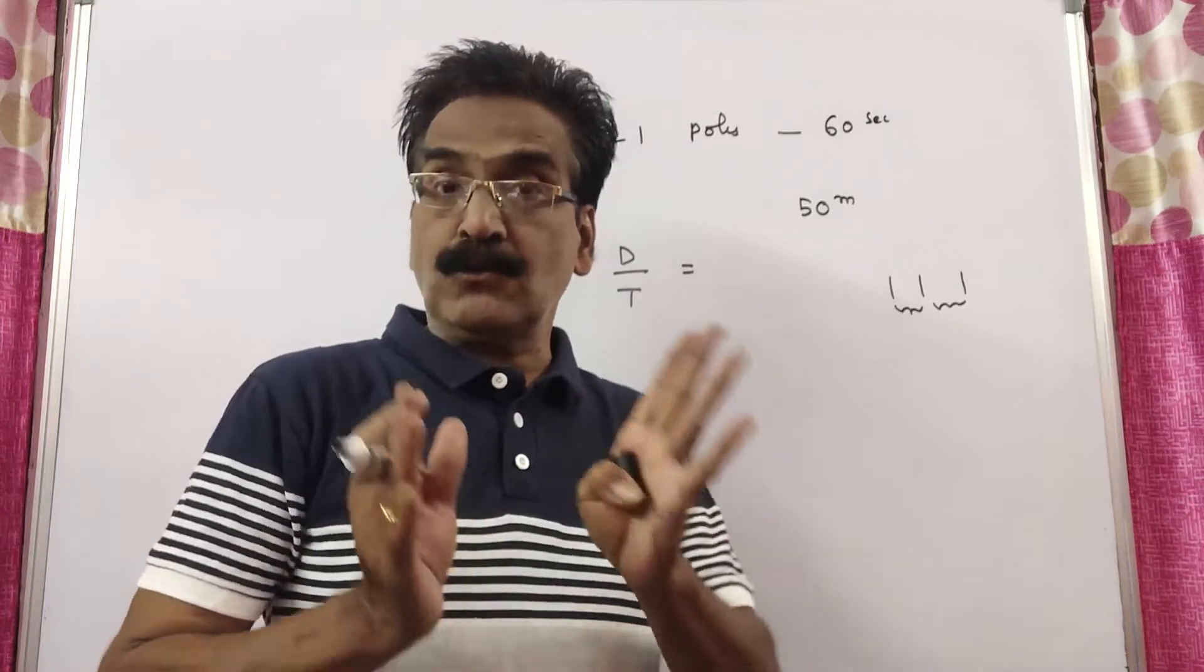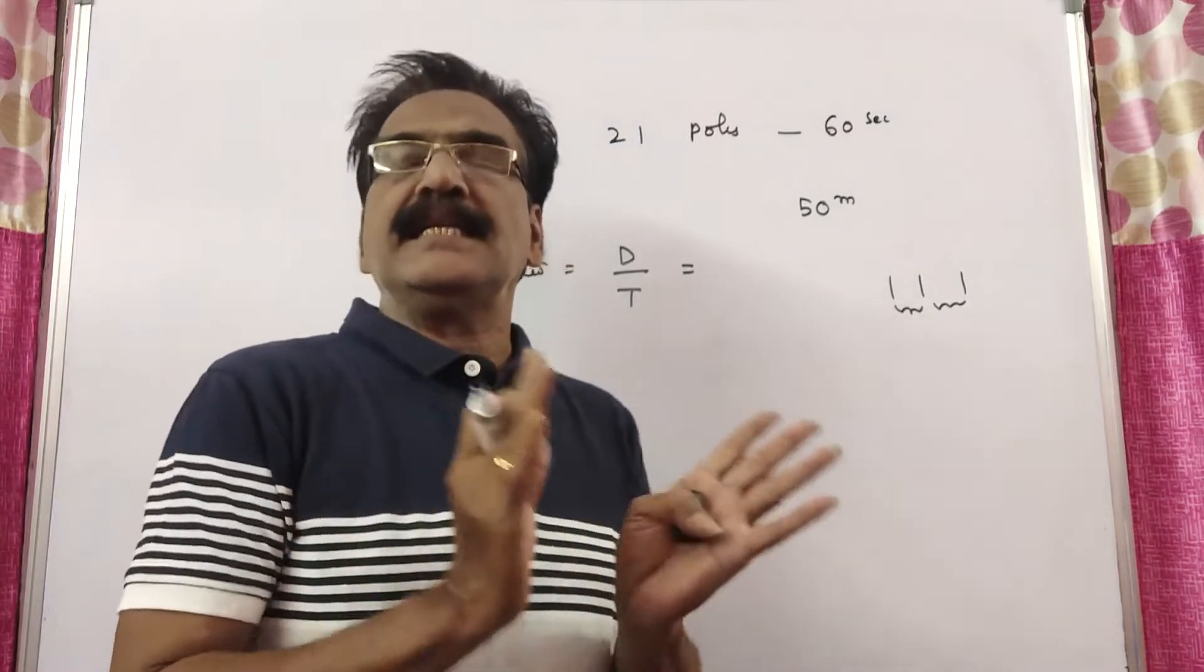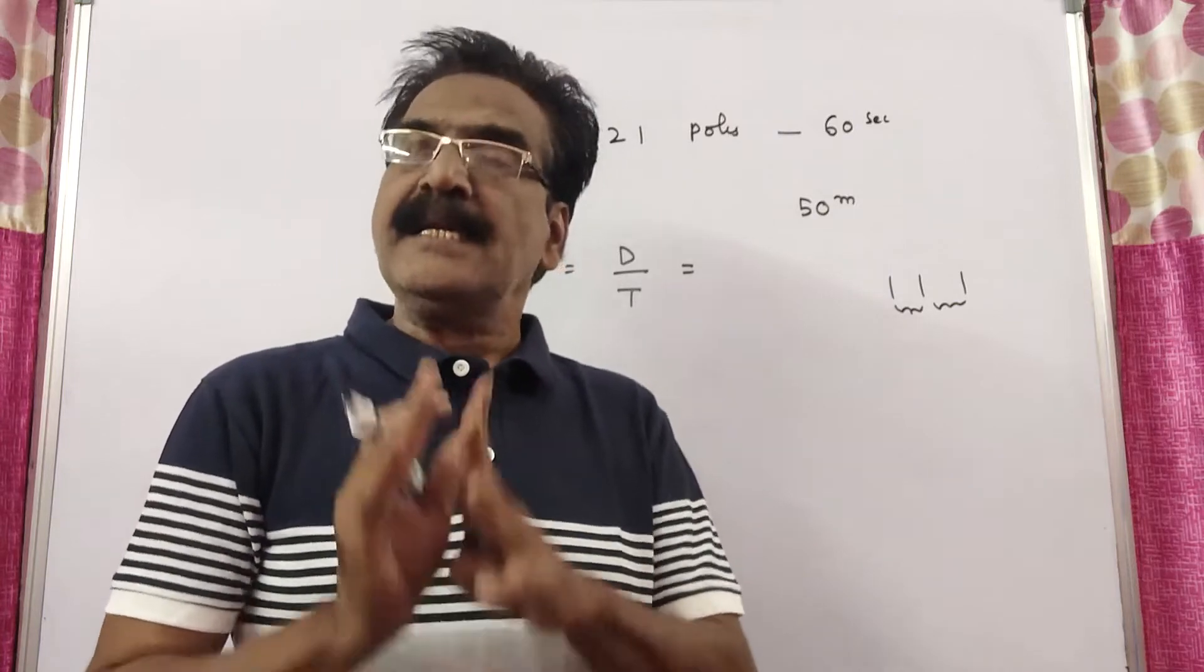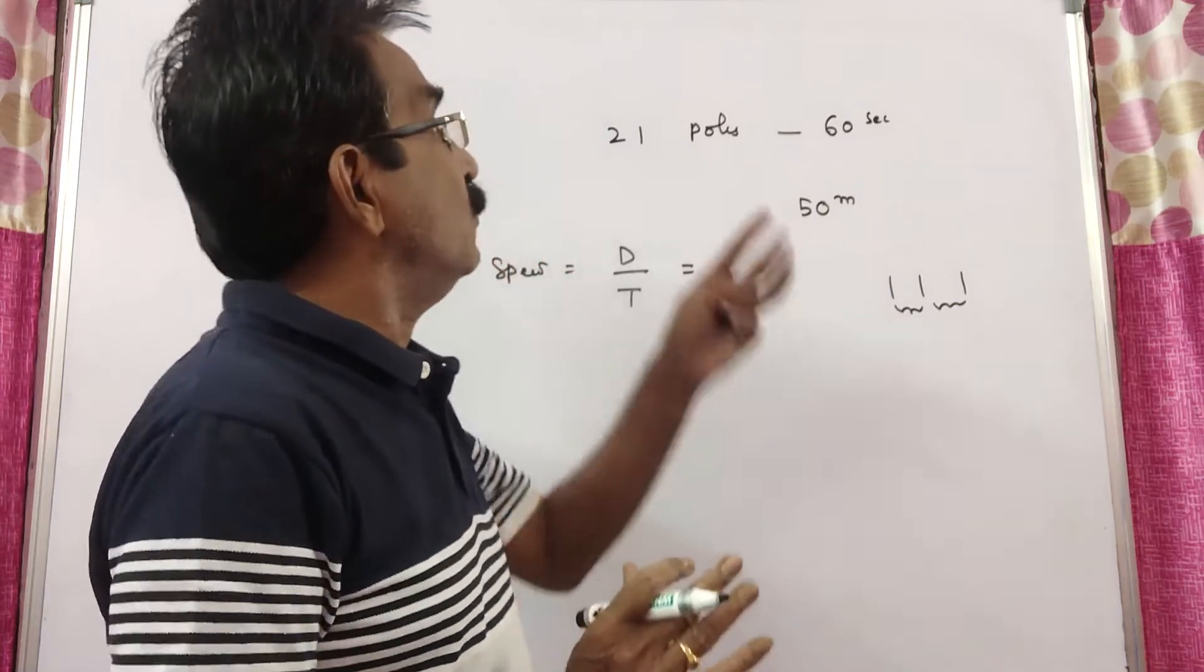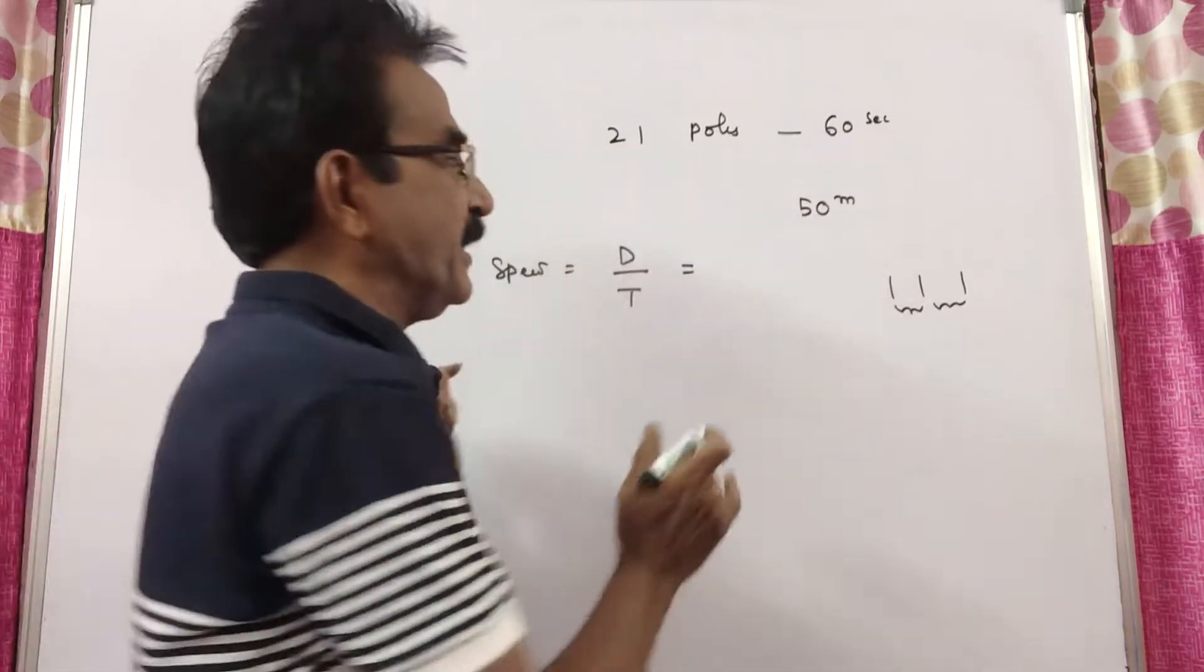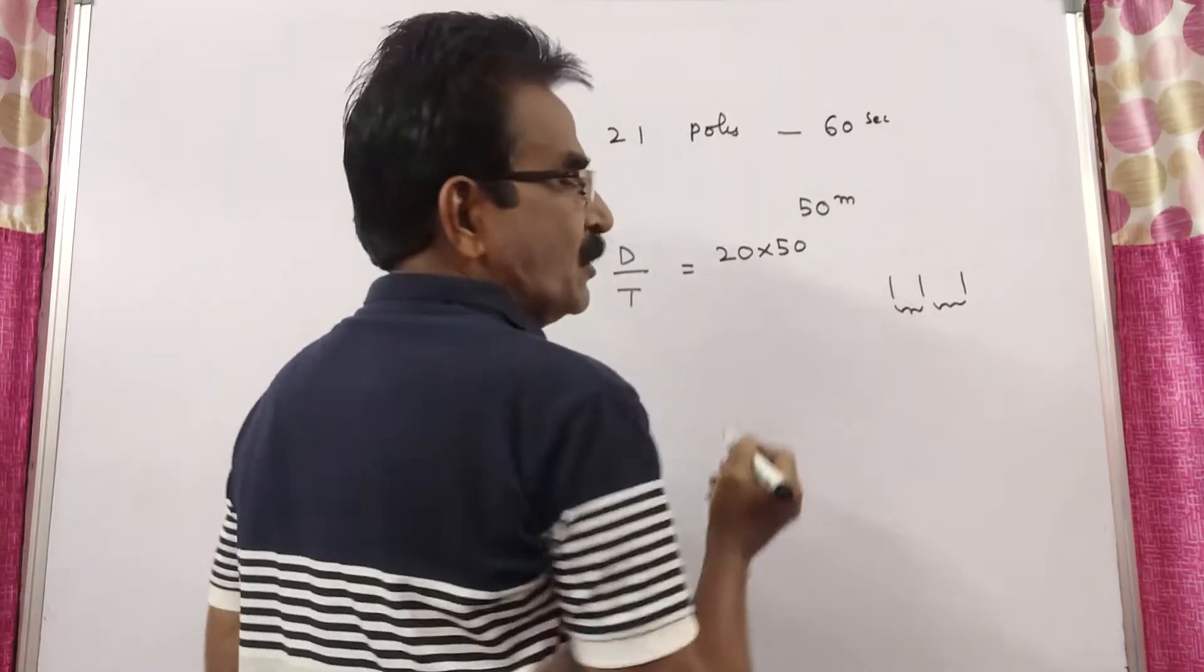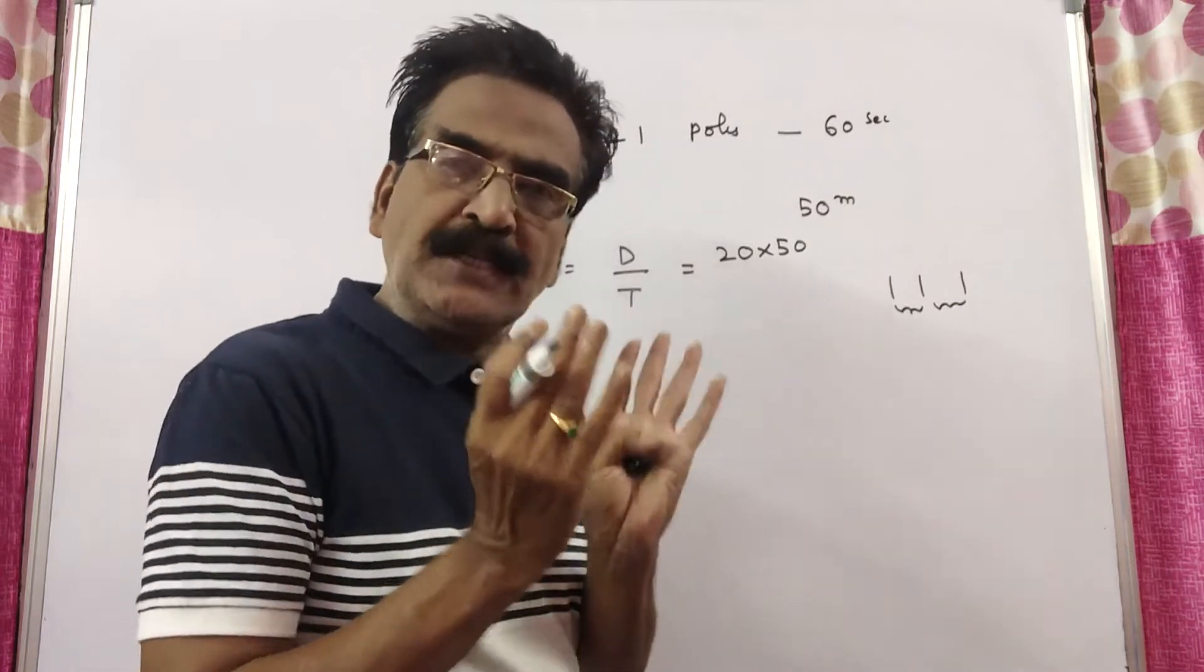So here he can count 21 poles means the distance traveled by the train in 1 minute is equal to 20 into 50. So 21 poles counted means I have to take 20 distances.